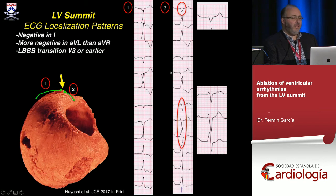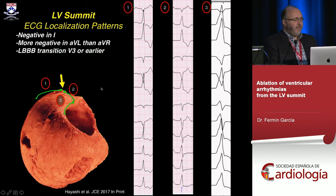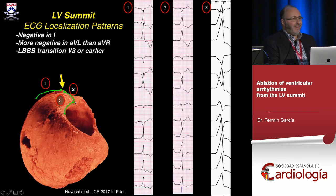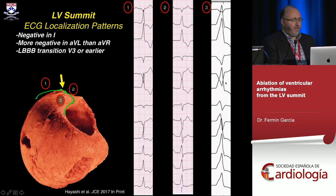These are the difficult EKGs — the ones we struggled with, and why we became so interested in this concept. As you get closer to the top of the LV ostium, you get earlier transition, almost right bundle branch block-like, with a similar EKG to what you see when you're very basal.